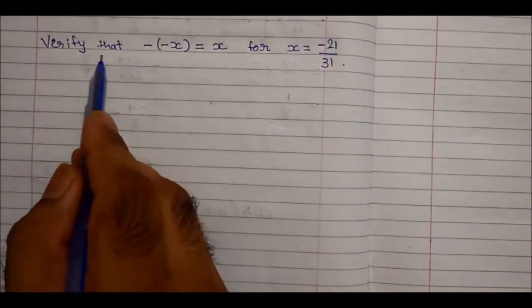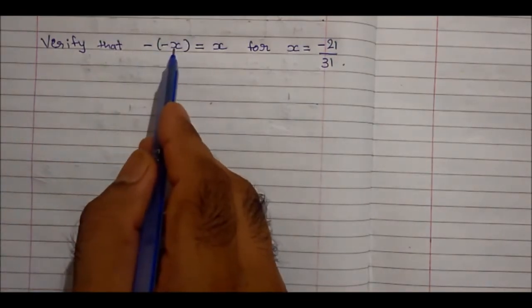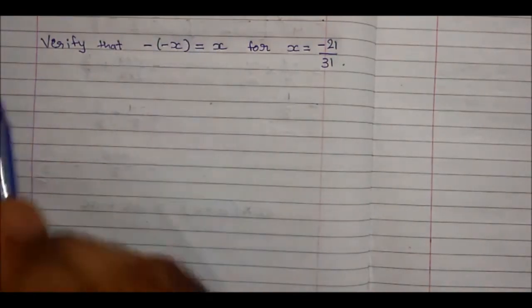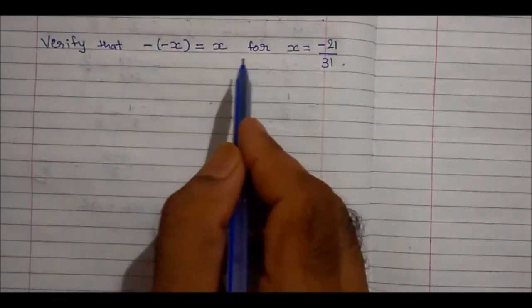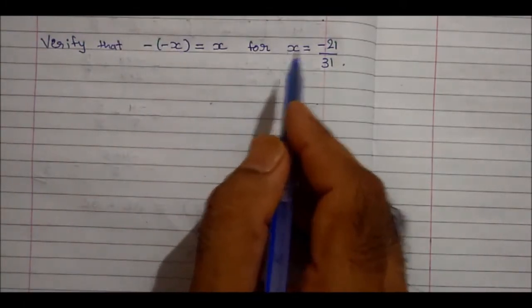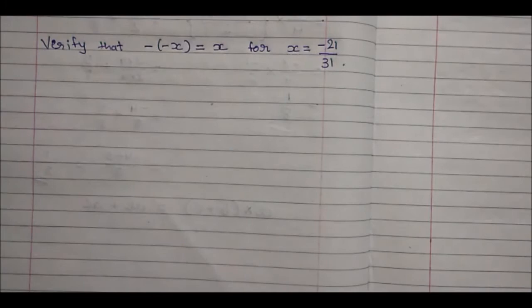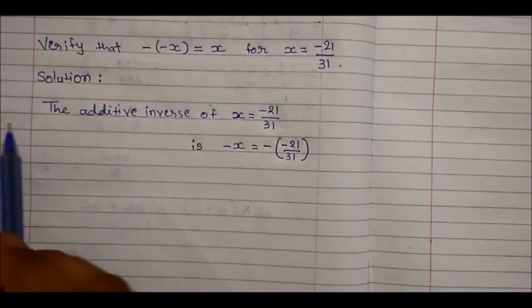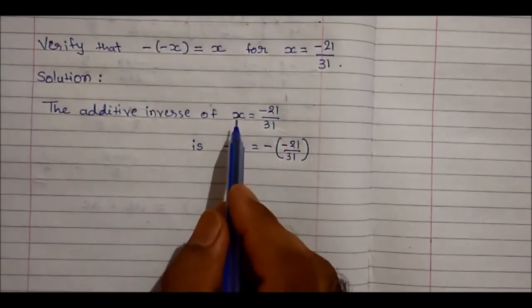Here we have a question: verify that minus of minus x is equal to x. We have to verify for the value of x is given as minus 21 upon 31. So let's do the additive inverse of x.